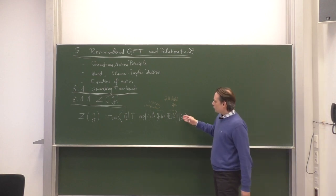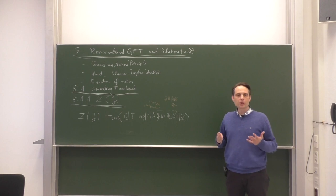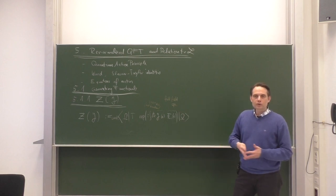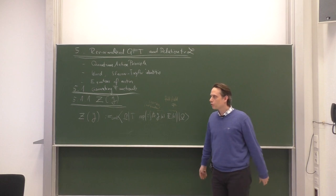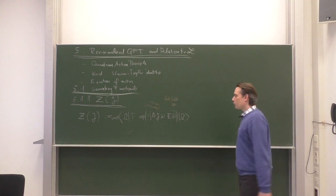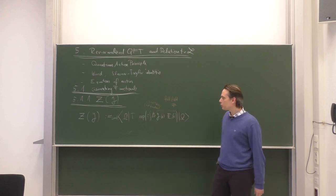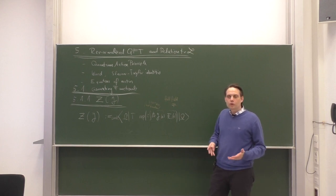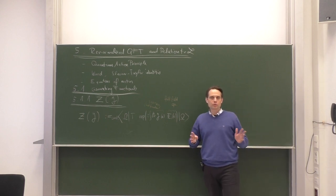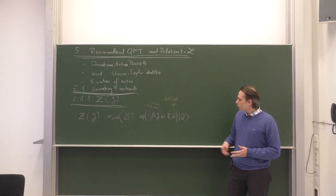This object on the left is a number-valued functional of the test functions J — one test function for each type of field operator — and it contains the information of all Green functions of your quantum field theory; therefore it is a very powerful object. These non-perturbative or exact Green functions of the full theory are the basic building blocks of any quantum field theory, covered by axiomatic quantum field theory, for example the Wightman axioms. They must exist in any reasonable quantum field theory.